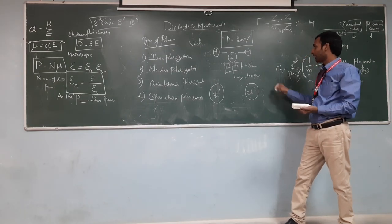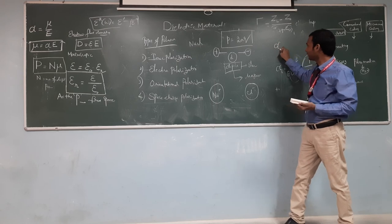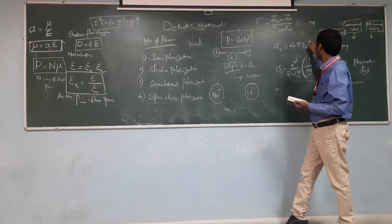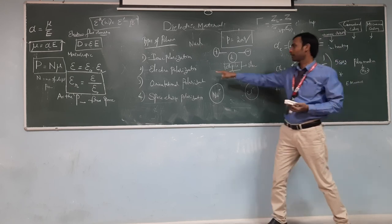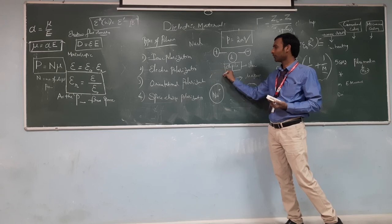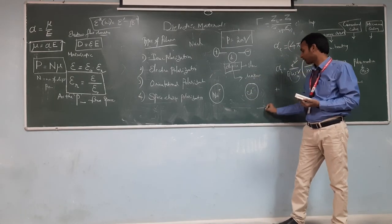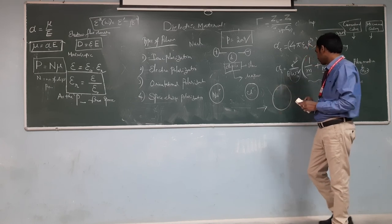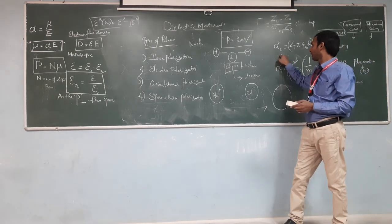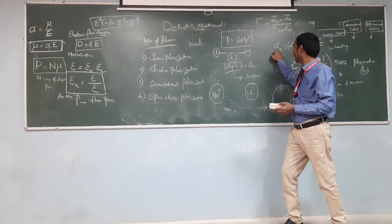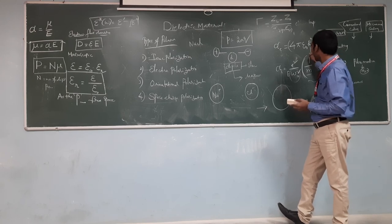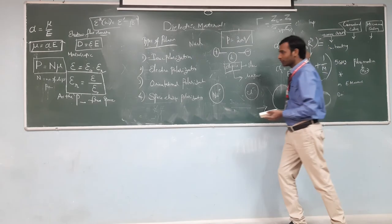Similarly for electronic polarization, the polarizability α = 4πε₀R³, where R is the radius of the atom and ε₀ is the permittivity of free space. In the absence of an electric field, atoms move in random directions. Once the electric field is applied, the unpolarized atom changes to a polarized atom with a different orientation.